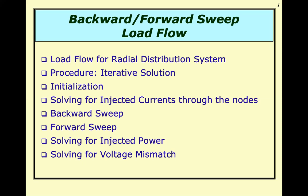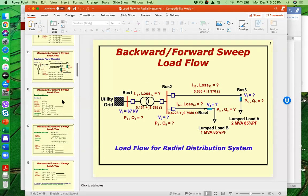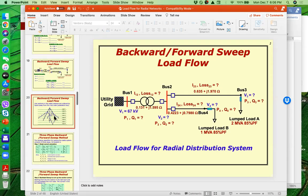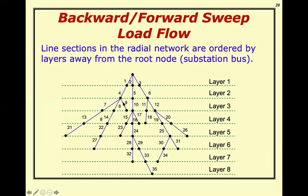For distribution networks, the main characteristic is that they are radial in nature — meaning they do not form a loop. There is no loop. Usually we have a substation and main feeders coming out, and then laterals. The definition of a loop is a path that starts from a node and ends at the same node. Here we clearly do not have a loop.